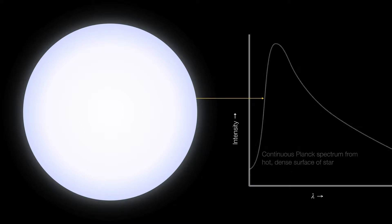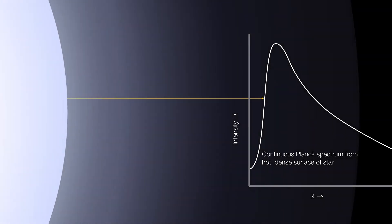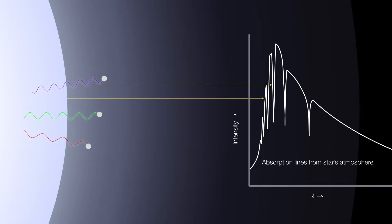First of all, we have the star itself, which is shining very much like a black body. The star is hot enough and dense enough to produce what would otherwise be a fairly smooth Planck curve, or black body curve. But the star has an atmosphere. It's the presence of atoms in the atmosphere — the electrons in those atoms — that intercept light at specific wavelengths as they emerge from the surface of the star. This results in the absorption of those colors or wavelengths from the resulting spectra, giving us the dips that you see here.